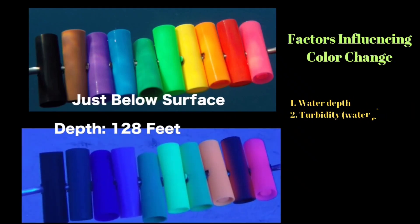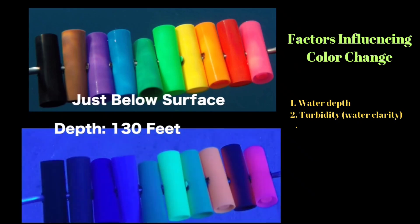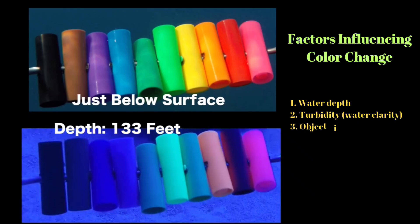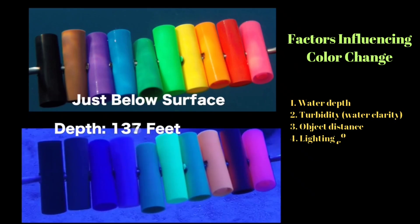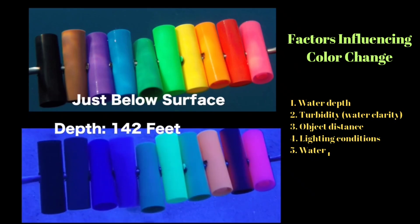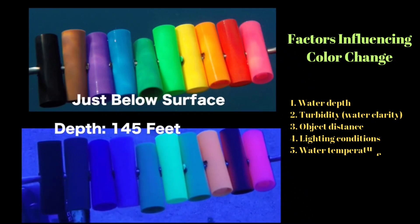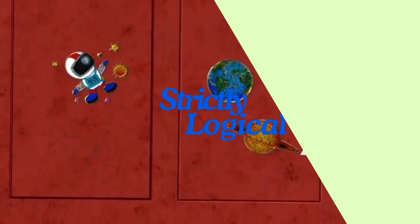First is water depth. Second is turbidity, meaning water clarity. Third is object distance. Fourth is lighting conditions. And fifth is underwater temperature.